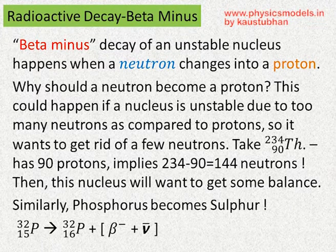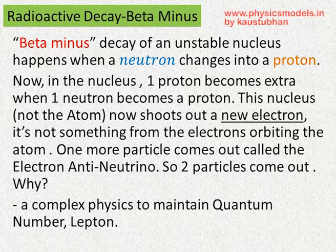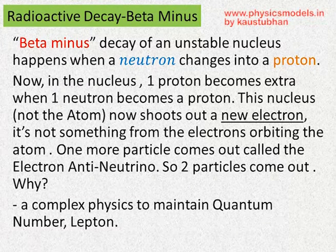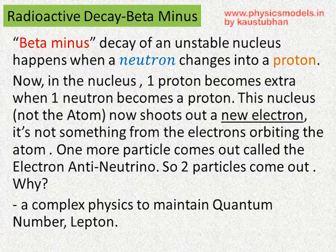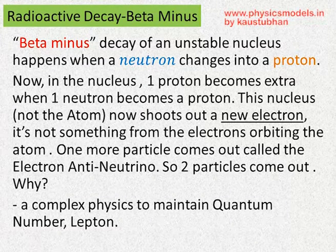Similarly, phosphorus also becomes sulfur in a beta emission. As we saw in the animation, when a neutron becomes a proton, it shoots out an electron as well as the anti-neutrino. The electron is negatively charged; the anti-neutrino does not have a charge. And the reason the anti-neutrino comes out is a complex phenomenon of the lepton quantum number which has to be maintained, and that's why two particles come out of that emission.